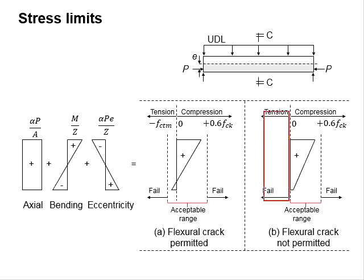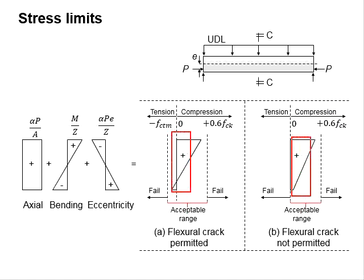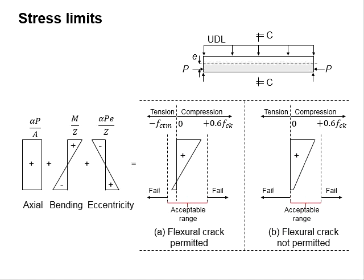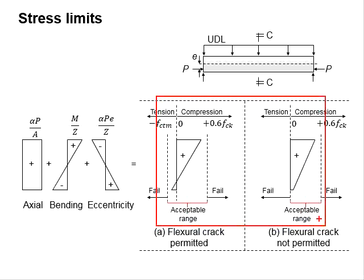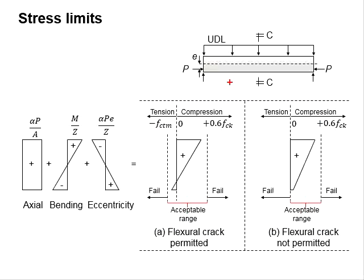For the flexural crack not permitted condition, no tensile stress is allowed. This gives an acceptable range between 0 and 0.6 FCK. The total stress which falls beyond the acceptable range is considered to fail, and thus the section needs to be redesigned. These stress limits are to be checked across the entire beam section, both at the mid-span and the support of a simply supported beam.